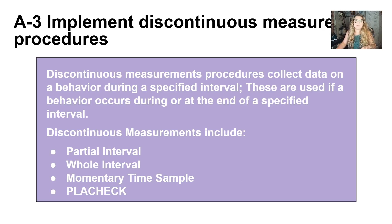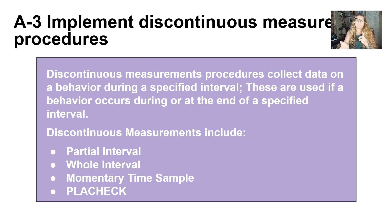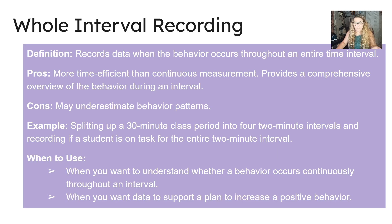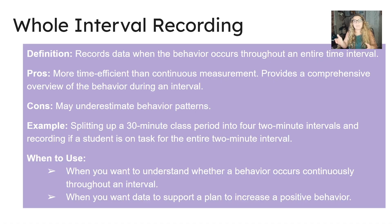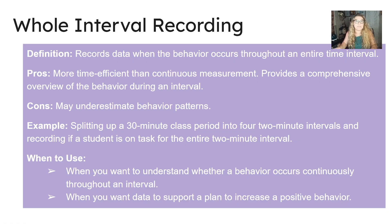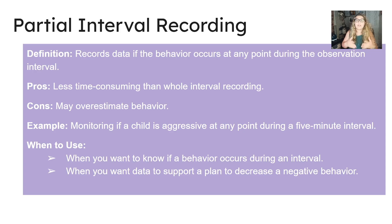A-3: Implement discontinuous measurement procedures. These collect data on a behavior during a specified interval, used when behavior occurs during or at the end of a specified interval. We have whole interval, partial interval, momentary time sampling, and placheck. Whole interval recording records data only when the behavior occurs throughout the entire interval. The pros are that it's more time-efficient than continuous measurement and provides a comprehensive overview; the cons are that it may underestimate behavior. An example is splitting a 30-minute class into two-minute intervals and recording if a student is on task the entire time.